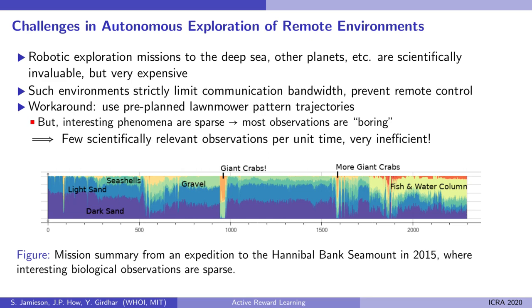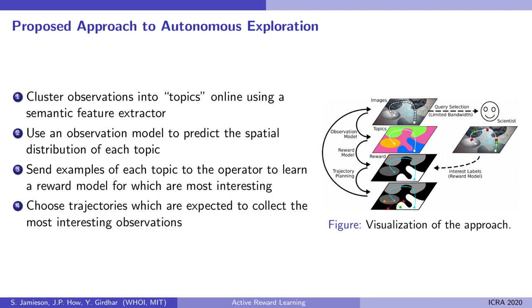Adaptive planning is much more efficient, but difficult in the context of searching for interesting visual observations in novel environments. Adaptive path planning is relatively easy if the robot knows what kinds of observations are interesting and where it is likely to find more of them. This is difficult to model for images, which are very high-dimensional.